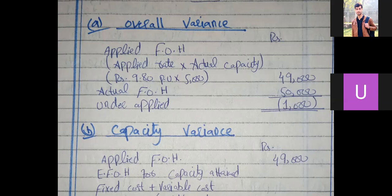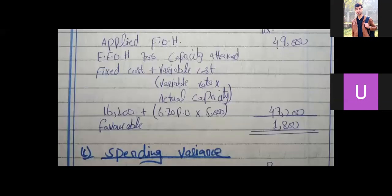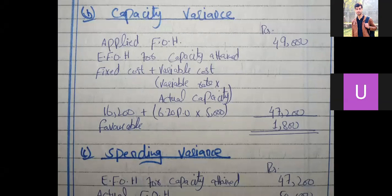It was lower than your output, so you have to find the capacity variance. To find capacity variance, keep applied FOH and estimated FOH for capacity attained. Estimated FOH for capacity attained equals fixed cost plus variable cost. Variable cost here is variable rate multiplied by actual capacity: 6.2 per unit times 5,000 units, plus fixed cost 16,200, giving Rs. 47,200.